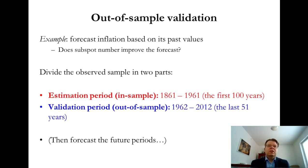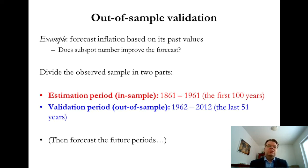I will also introduce the sunspot data and ask the question: does this sunspot data actually help to improve the forecast or not? In the in-sample estimation period, introducing some additional information will always improve your in-sample fit, but it's not always clear that introducing additional information would improve your out-of-sample forecast. That's why it's also important to do this kind of validation period, where you do this out-of-sample forecast to see whether the additional information helps.